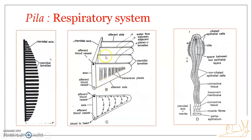The lamellae are not all of equal size. Towards the extreme ends of the ctenidial axis, the lamellae are smaller, while towards the middle of the ctenidial axis the lamellae are larger. So the size of the lamellae decreases towards the two ends — the anterior and the posterior.